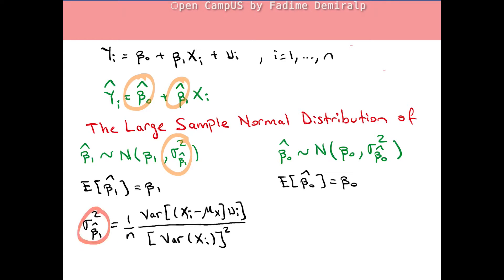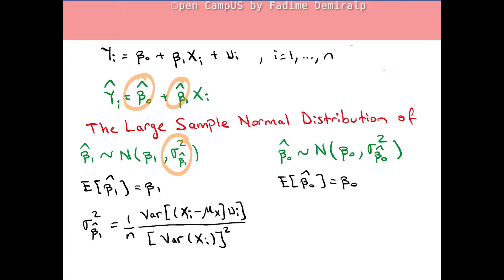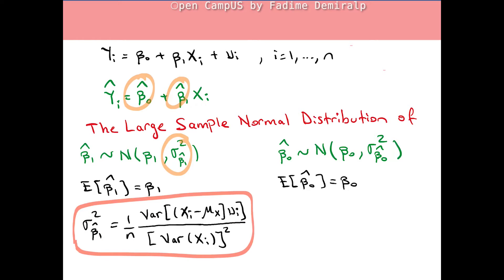The variance of β₁-hat is inversely proportional to the square of the variance of the independent variable xᵢ, which implies that the larger the variance of xᵢ, the smaller the variance of β₁-hat. The variance of β₁-hat is also directly proportional to the variance of the error uᵢ, which implies that the smaller the variance of the error, the smaller the variance of β₁-hat.